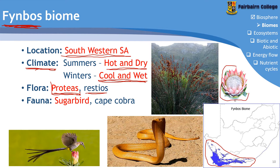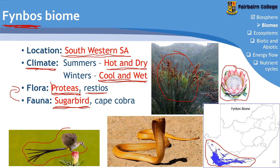The Restio is characterized by long, thin reed-like structures. The types of animals that live here include the Sugarbird, which has a longer-than-normal beak that helps it get into the tough leathery leaves of the Fynbos to reach the nectar, as well as the Cape Cobra, which is unique to the Fynbos biome.